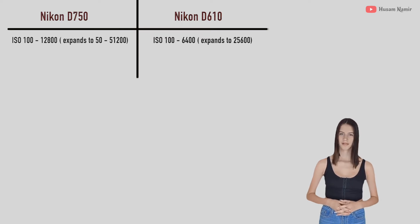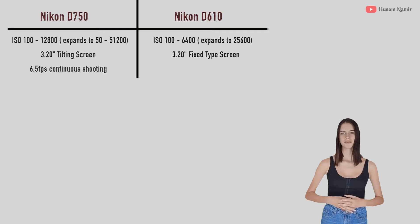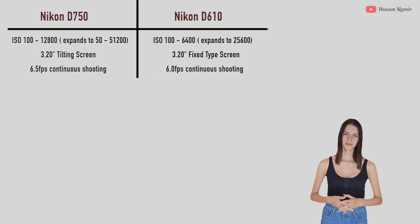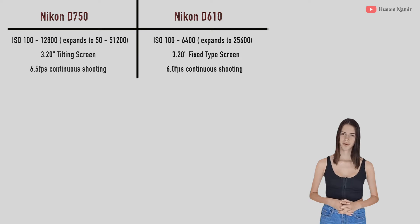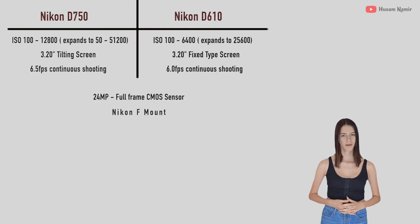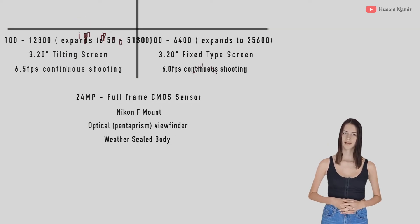The D750 has a tilting screen, while the D610 has a fixed type screen. The D750 shoots 6.5 frames per second, while the D610 shoots only 6. Both of them have the same 24 megapixel full-frame CMOS sensor. Both of them have Nikon F mount for the lenses, an optical viewfinder, and a weather-sealed body.